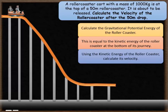Here's our question. We have a roller coaster cart with a mass of a thousand kilograms and it's at the top of a 50 meter roller coaster. It's about to be released. Our task is to calculate the velocity of that roller coaster after it's undergone this 50 meter drop. There are three steps in doing this.